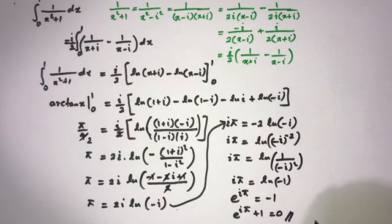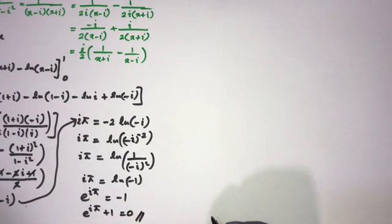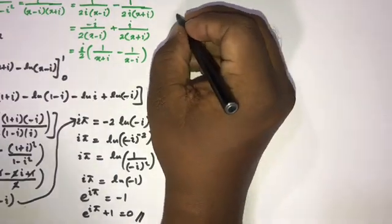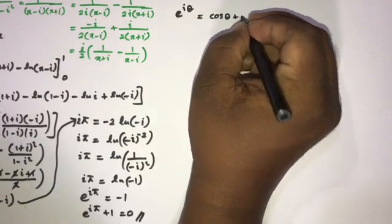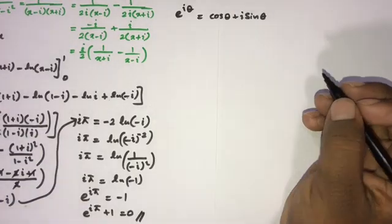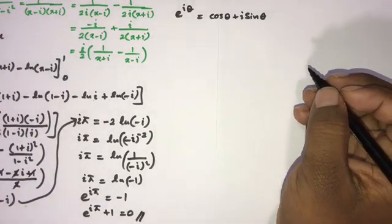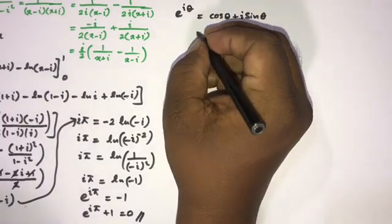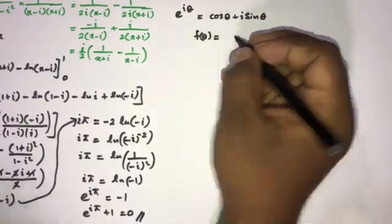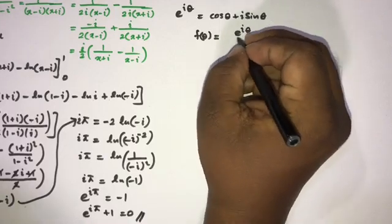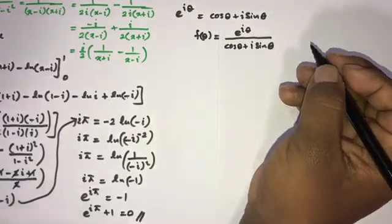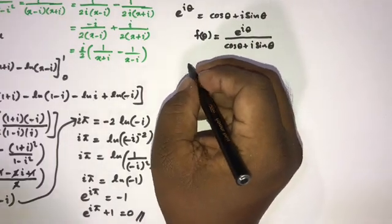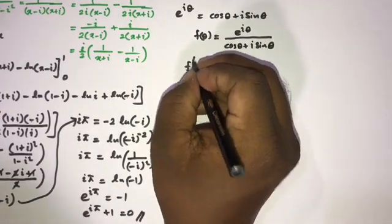Now I'm going to use differentiation as the second method. I'll take Euler's formula e to the i theta equals cosine theta plus i times sine theta, and define a function f of theta equal to e to the i theta divided by (cosine theta plus i times sine theta).